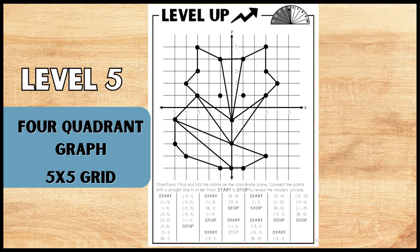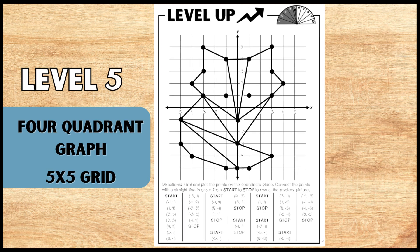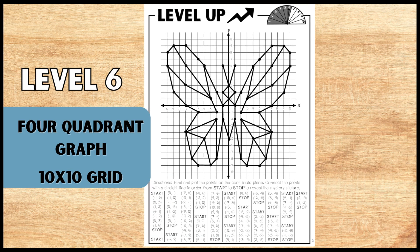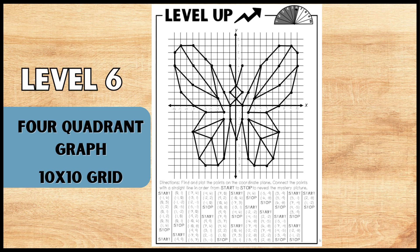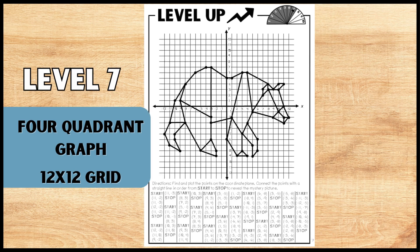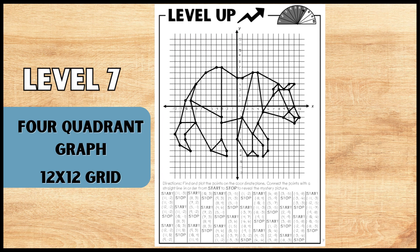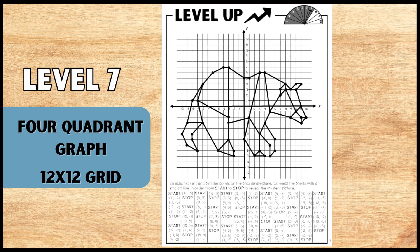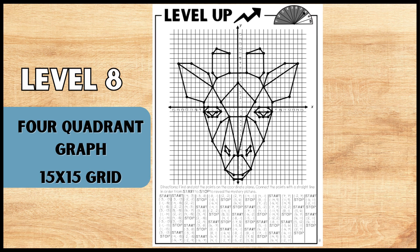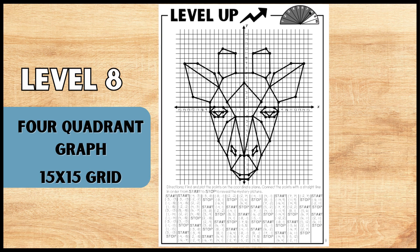Level 5 introduces students to a four quadrant graph with an easy 5 by 5 grid that graphs a fox. Level 6 mystery picture is on a 10 by 10 four quadrant graph and graphs a butterfly. Level 7 mystery picture is on a 12 by 12 four quadrant graph and graphs a bear. And level 8 has your students graphing on a 15 by 15 four quadrant graph and graphs a giraffe.